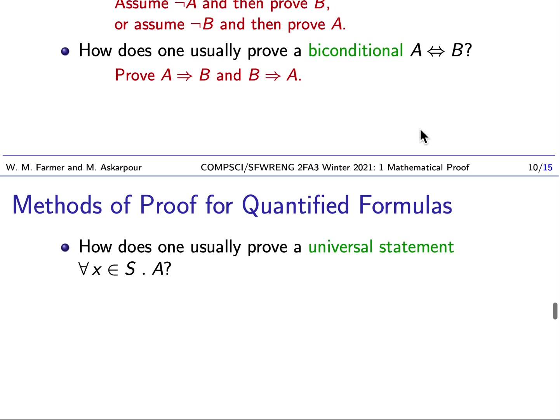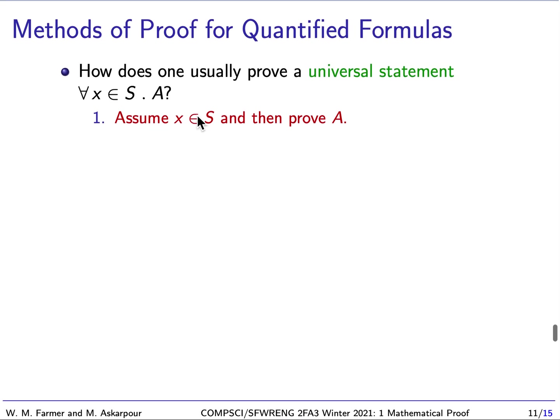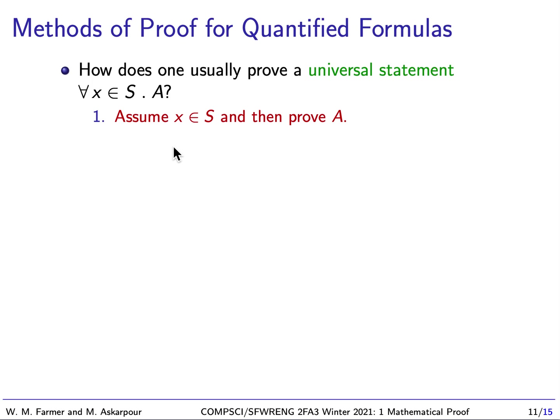Okay, so let's look at some methods of proof for quantified formulas. If we're going to be asked to prove a universal statement, in this case, the statement is for all x, all members x of a set S, A holds. How do we prove this? Well, the standard and most general approach is to assume that x is some member of S, and then prove A. Now presumably, A is going to be a statement that says something about x. We're just going to prove A then. So because we're assuming x is a member of S, we really don't know anything about the value of x. We just know it's a member of S. And if we can prove A knowing nothing about the value of x except that it's a member of S, that is an effective way of proving a universal statement.